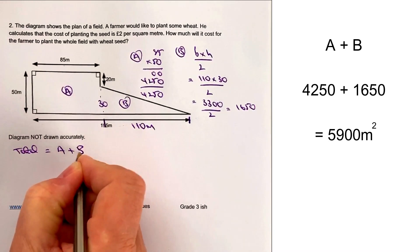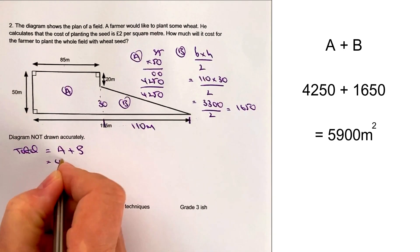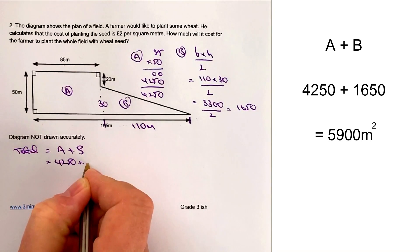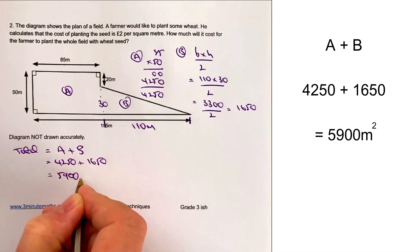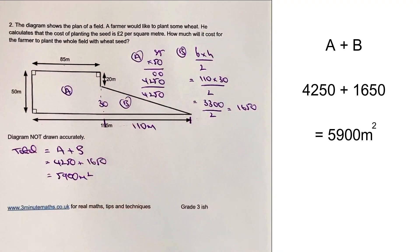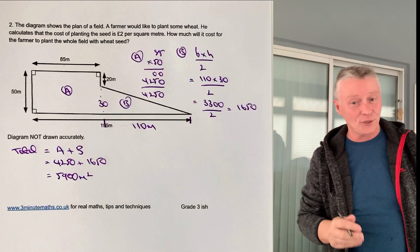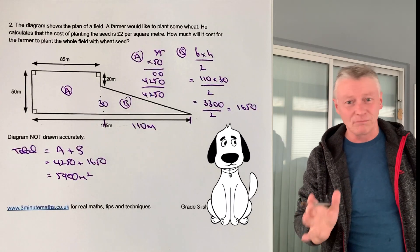The total is going to be equal to A plus B, which is 4250 plus 1650. So the total area of the whole field is 5,900 square meters. Quite a big field, I would have thought.